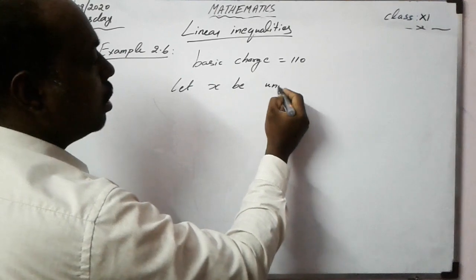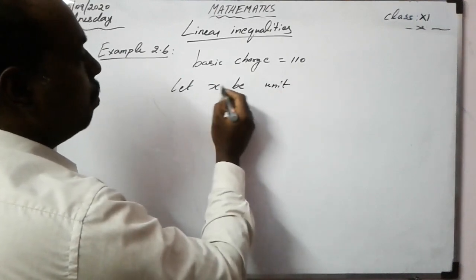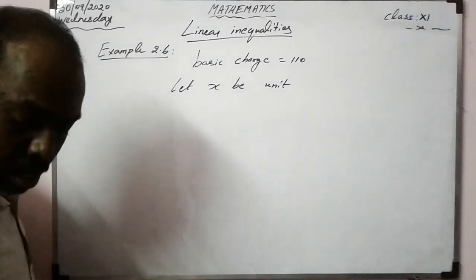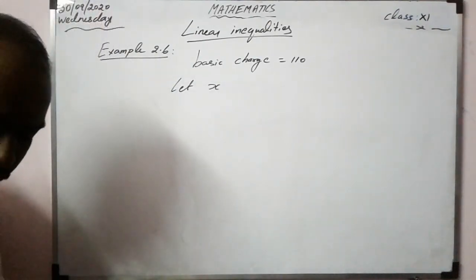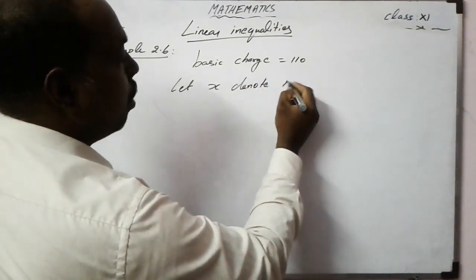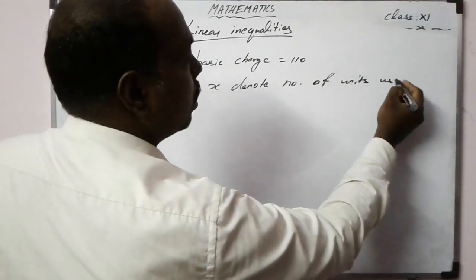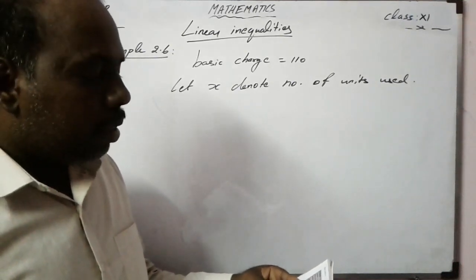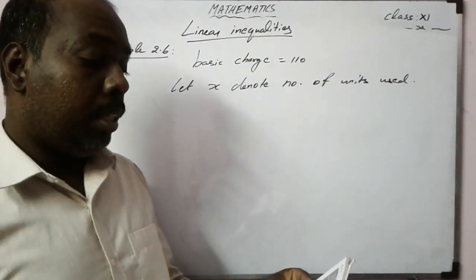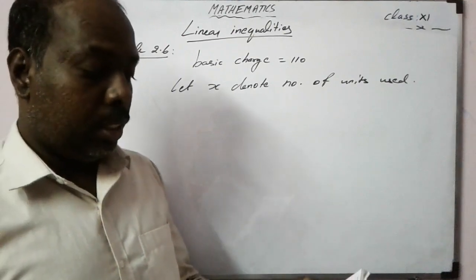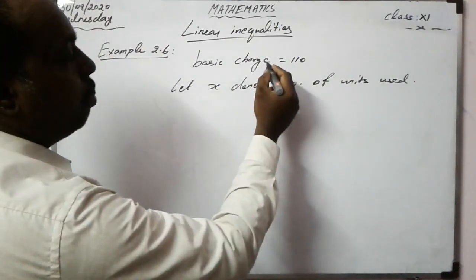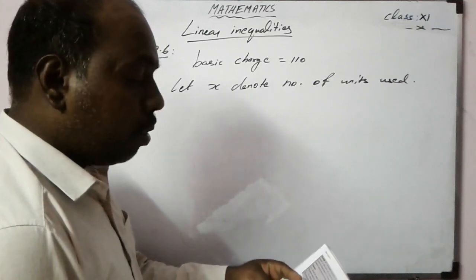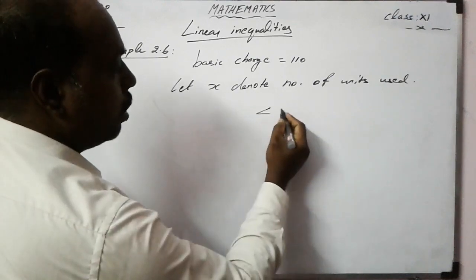Let x denote the number of units used. If a person wants to keep his electricity bill below rupees 250, then what should be his electricity usage? So the person wants to keep his bill below rupees 250, that is less than 250.